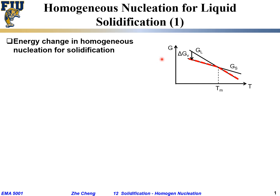What are we plotting? We are plotting G for Gibbs free energy versus temperature. We have two lines: one labeled Gs for the solid phase and the other Gl for the liquid phase. Each of these lines represents how the free energy changes as we change temperature, and these two lines meet at a certain location — Tm for melting point.